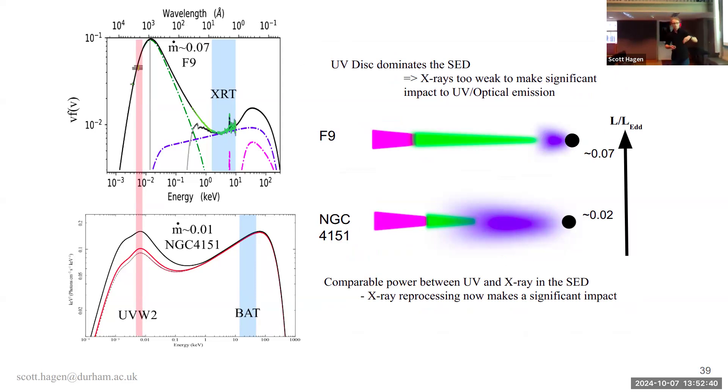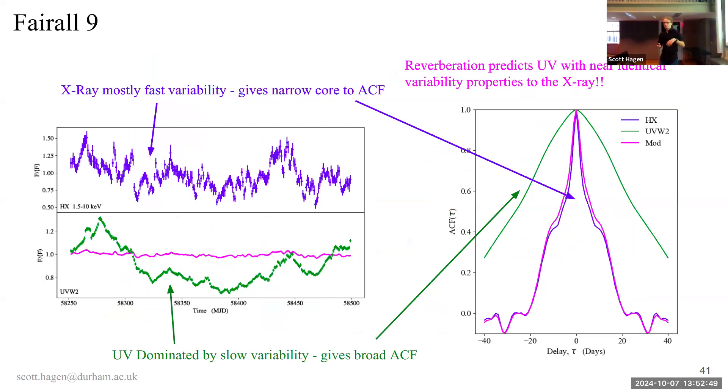But the question we should be asking, then, is, okay, if it's not from reverberation, what is actually driving the variability? And so looking at IRAS 13224, my favorite object, probably because I spent an entire PhD looking at it, and ask the light curves, what are you doing? So you've got light curves on the left hand, and you've got autocorrelation functions on the right. The way to think about ACF is it's like the Fourier domain power spectrum. So it's telling you about the variability timescale. So if you've got really broad ACF, like the UV in green here, that's telling you you're dominated by nice, slow, long-term variability, whereas if you've got fairly narrow ACF, like your X-rays in blue, that's telling you you're dominated by quite fast, short-term variations.